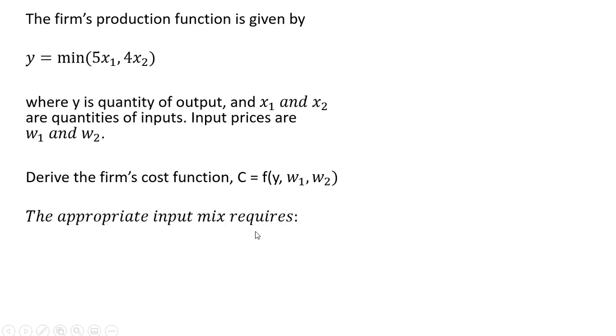The appropriate input mix requires that output equals 5 times input X1, which will also equal 4 times input X2. So we have to use these inputs in fixed proportion, so the only input combination that makes sense is when these values are all equal.